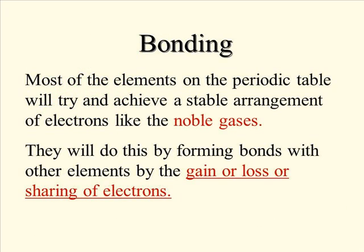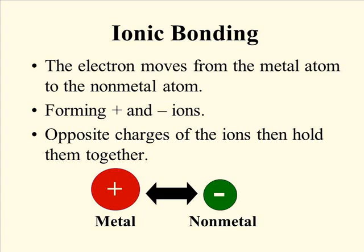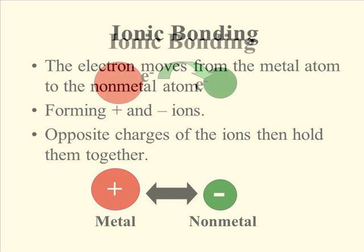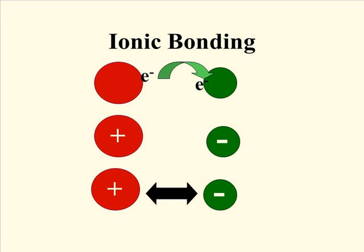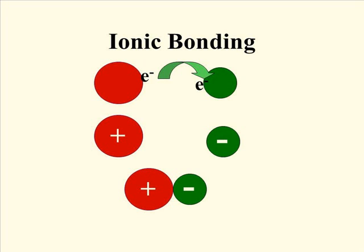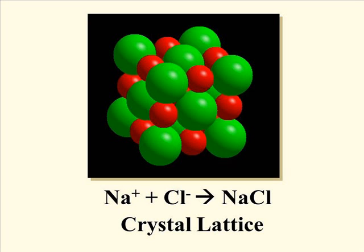Most elements will try to achieve this stable noble gas arrangement of electrons, and for ionic compounds they do this by gaining or losing electrons. Later with covalent compounds we will look at sharing of electrons, but they still want to get that noble gas arrangement. As the electron moves from the metal atom to the non-metal atom, positive and negative ions form, and the opposite charges hold the ions together in a more stable, low-energy arrangement called a crystal lattice.